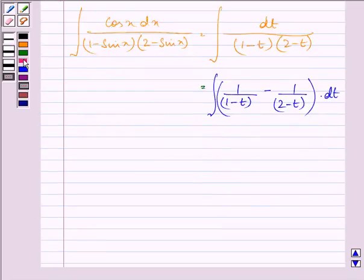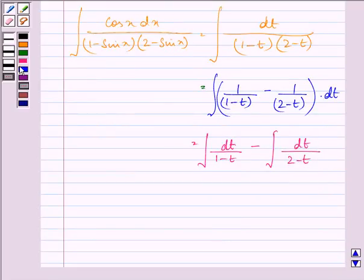Taking integration sign separately with each term, we have integral dt upon 1 minus t minus dt upon 2 minus t.